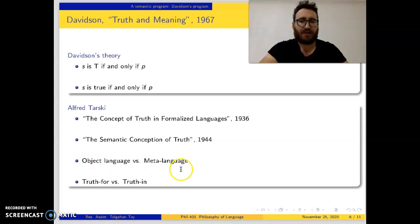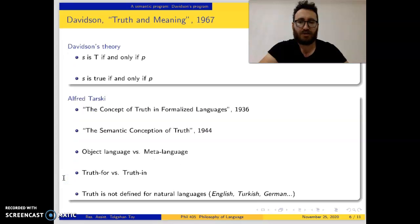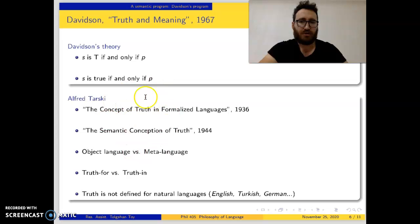There is this hierarchy, and since we do not have this hierarchy in natural languages, for Tarski truth is not defined for natural language — it cannot be defined for natural languages like English, Turkish, or German. That is important because Davidson borrows this semantic conception of truth, Convention T, from Tarski — but Tarski says you cannot define truth for natural languages.